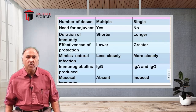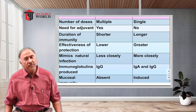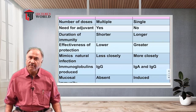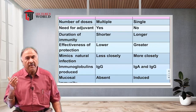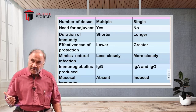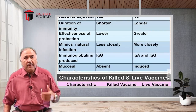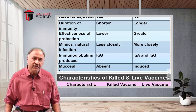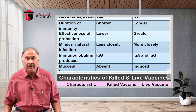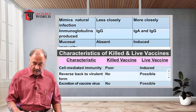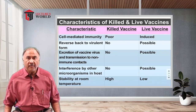Regarding the type of immunoglobulins produced: in killed vaccines, IgG type immunoglobulins are normally formed. In live vaccines, IgA is produced in the initial stages followed by IgG. Mucosal immunity is totally absent in killed vaccines because no IgA antibodies are formed, while in live vaccines mucosal immunity is induced due to IgA production. Additionally, cell-mediated immunity is poor with killed vaccines, while it is well induced with live vaccines.